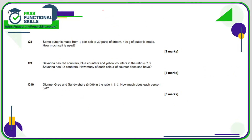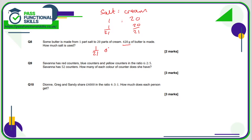Question 8: the ratio of salt to cream is 1 to 20. As fractions, 1 out of 21 is salt and 20 out of 21 is cream, because 1 plus 20 is 21. We want to know how much salt is used to make 420 grams of butter. One twenty-first of 420 is 420 divided by 21, which is 20. So 20 grams of salt is used.